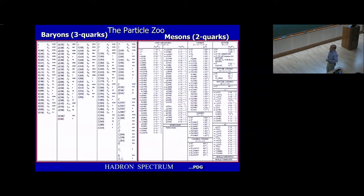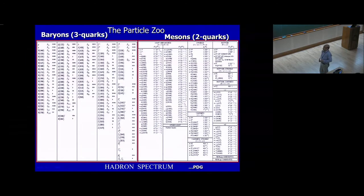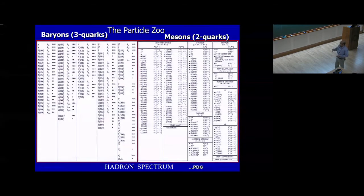What is the goal? There are lots of particles in the particle data group — baryons and mesons. The goal is to study the masses of these particles, their interactions, their properties, their decay. We want to see if we can calculate the properties of various particles using lattice regularization. That's the primary goal, though there are many other goals I'll concentrate on here.